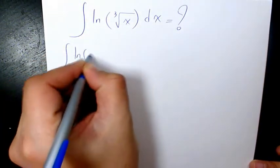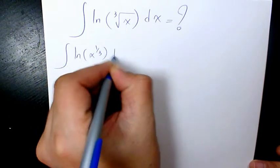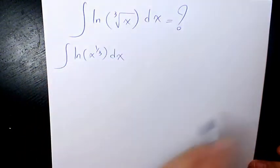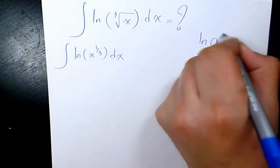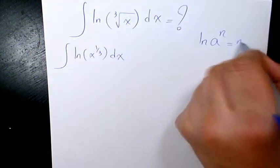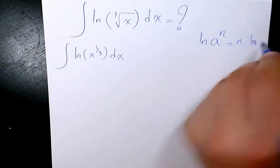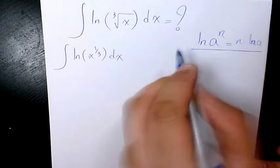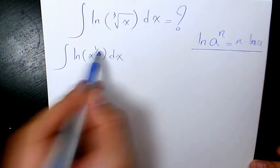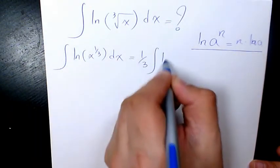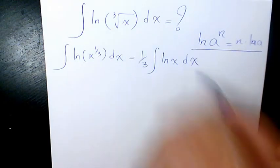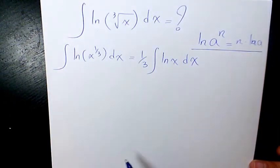Since you have it in the exponent, we can say ln of a to the power of n is going to be the same as n times ln of a. That's why we can take this 1 over 3 and make it as the coefficient and take it out. So it's going to be 1/3 integral of ln x dx. Now we need to find out the integral of ln x dx.